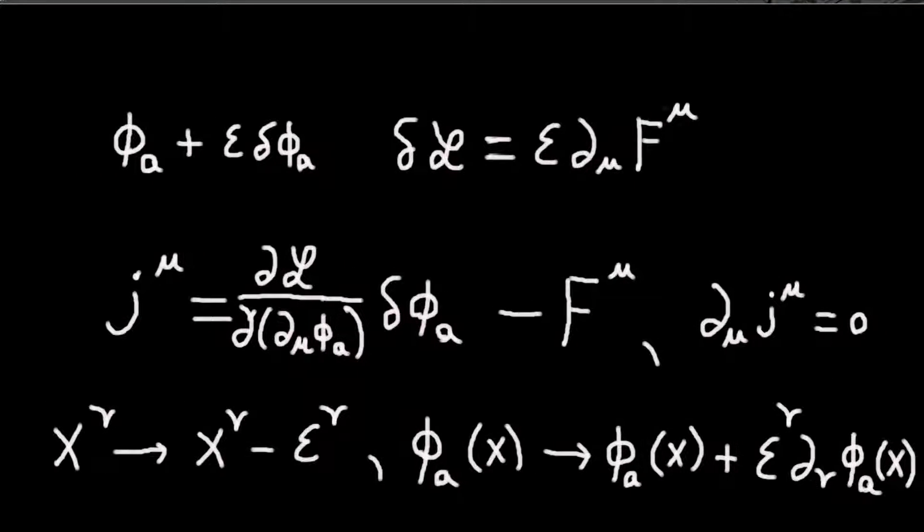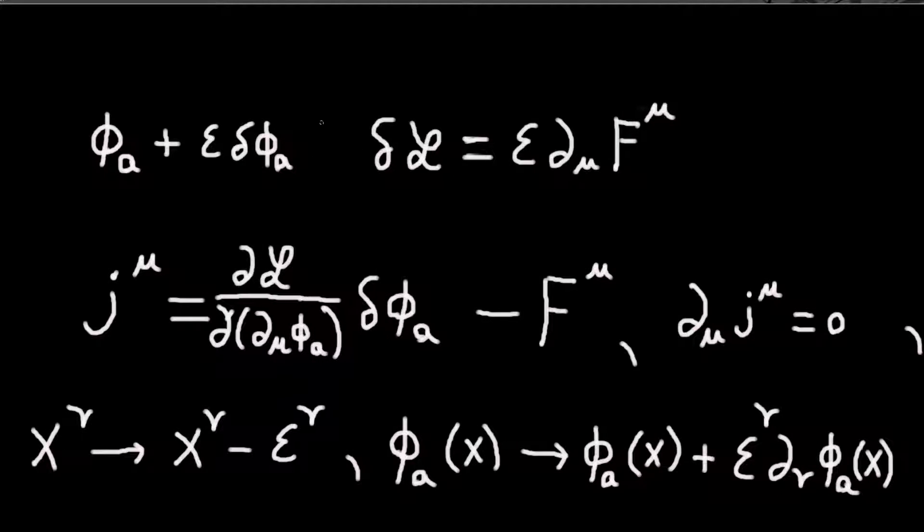So let's see how to actually calculate this current. So the first thing we're going to do is consider instead of directly varying the fields, we're going to vary the coordinates, we're going to translate our coordinates. And since we're translating each of the coordinates, really this corresponds to four different variations. So this will lead to four conserved currents.